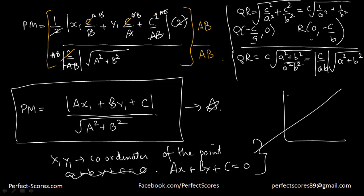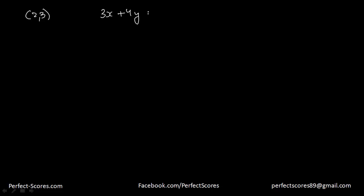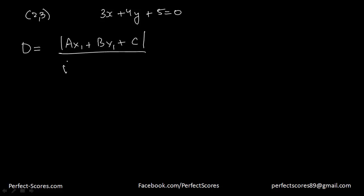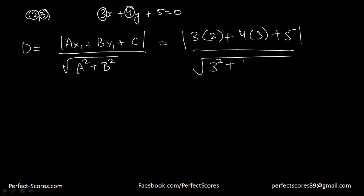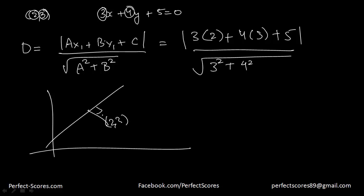Let's use an example. Suppose we want to find the shortest distance between the point 2 comma 3 and the line 3x plus 4y plus 5 equals 0. The distance equals the modulus of 3 times 2 plus 4 times 3 plus 5, divided by the square root of 3² plus 4². If you calculate that, you get the distance from the point 2 comma 3 to this line.